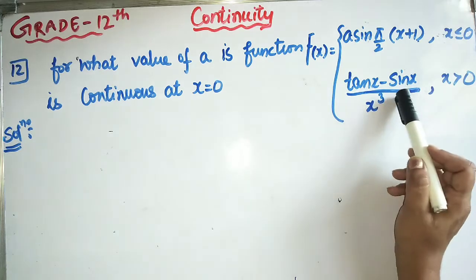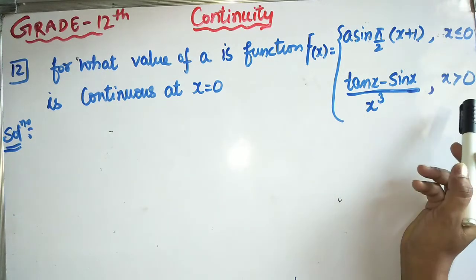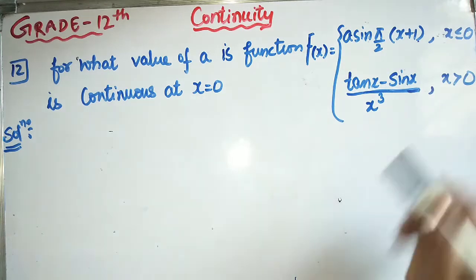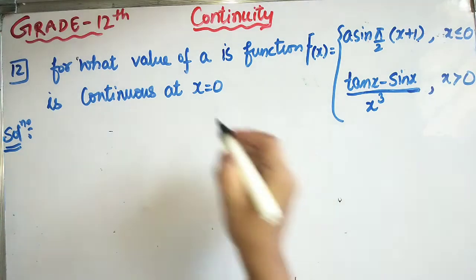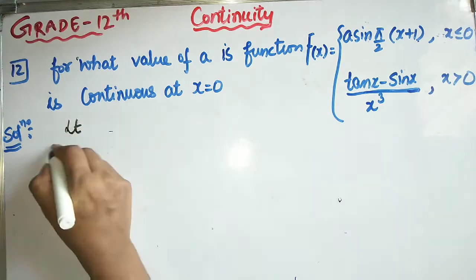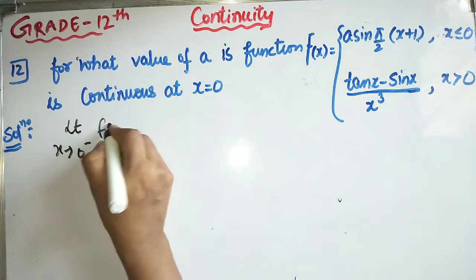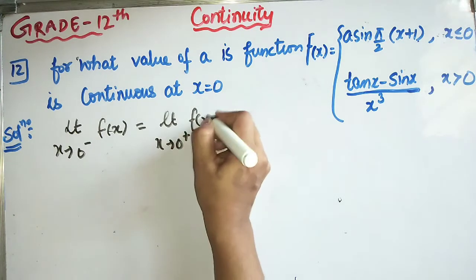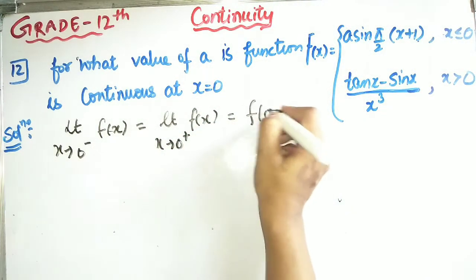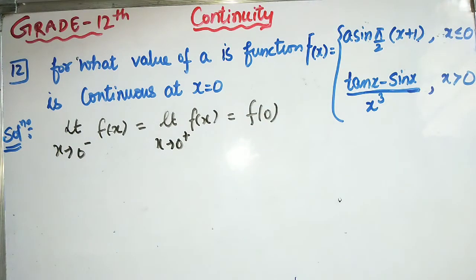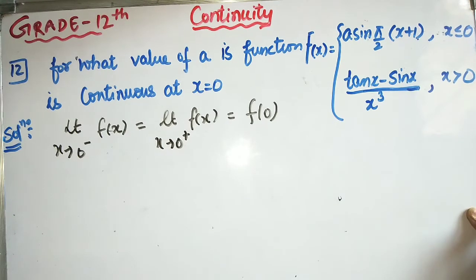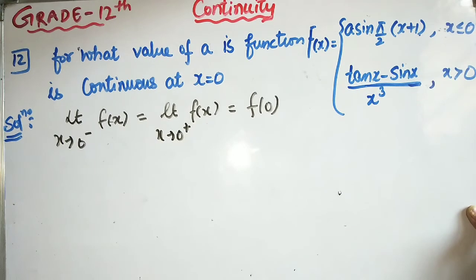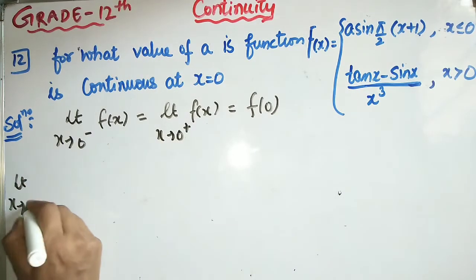Next question: check if f(x) is continuous at x = 0, where f(x) = (10x - sinx)/x³ for x > 0. We need to find a constant. For continuity at x = 0, we need: limit x → 0⁻ f(x) = limit x → 0⁺ f(x) = f(0). We check both one-sided limits.